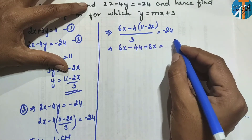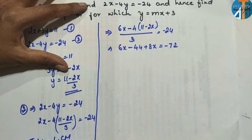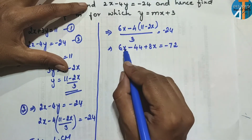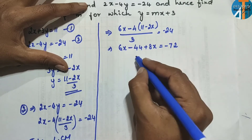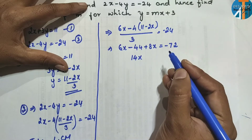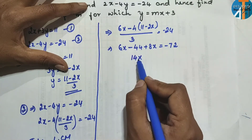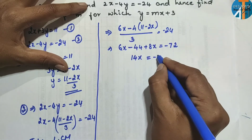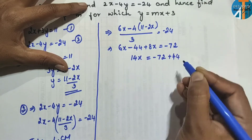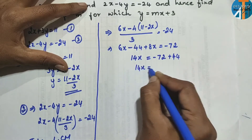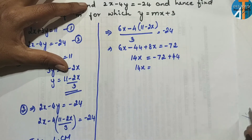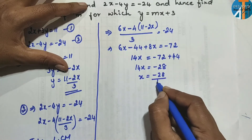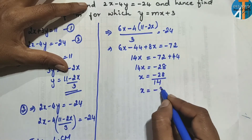So 24 × 3 = −72. Now 6x + 8x = 14x. Taking −44 to the right-hand side it becomes +44. So 14x = −72 + 44, giving 14x = −28. Therefore x = −28/14, so x = −2.